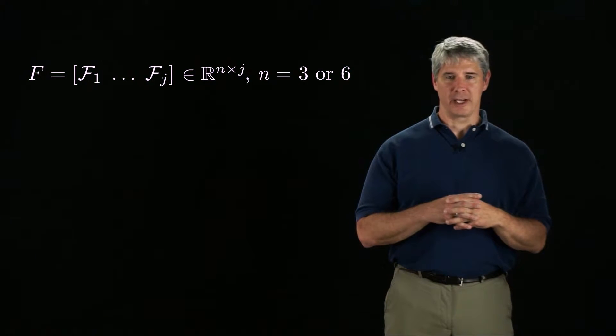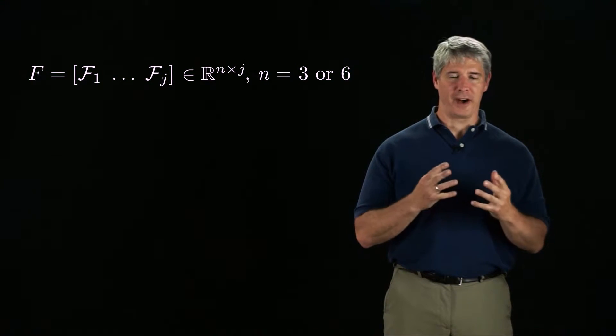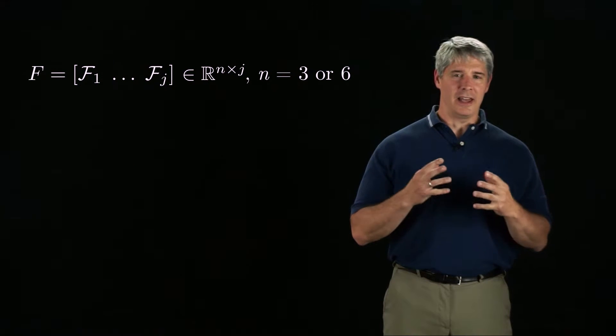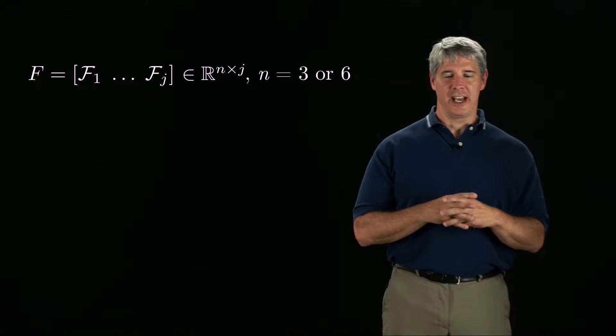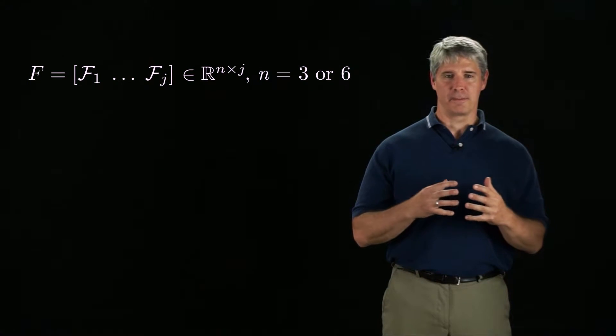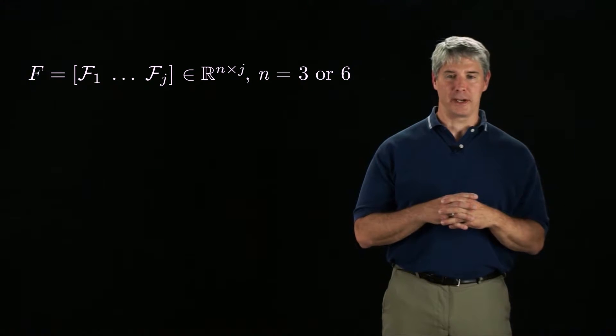Spatial friction cones are approximated by polyhedral friction cones with a finite number of edges. The F matrix has J columns, one for each friction cone edge, in either three rows or six rows, depending on whether the body is planar or spatial.